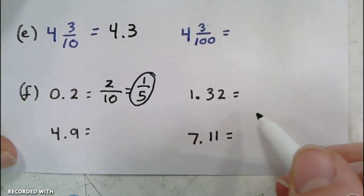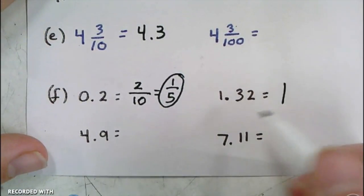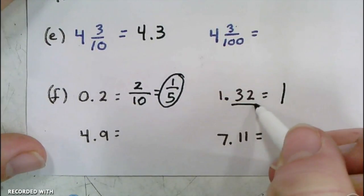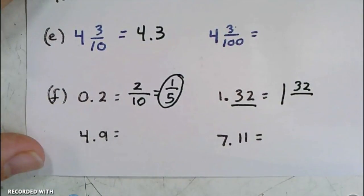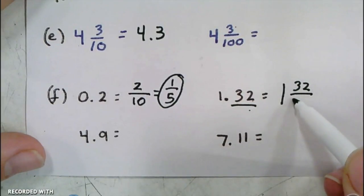For this one, I have a whole number of 1, and then I'm going to write my decimal. So my decimal is 32 as my numerator, and my denominator will be the place value that the last number is in. So this is the tenths and this is the hundredths, so it's going to go over 100.